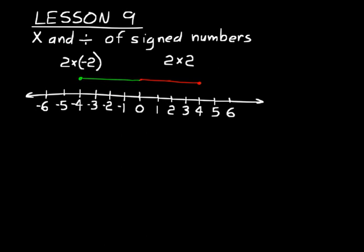Now we have one more combination: negative two times negative two. Think about it — we're saying the opposite of two times negative two, because that's what a negative sign also means: the opposite of. So if two times negative two is negative four, the opposite of that would be a positive four. We'd be back at positive four.